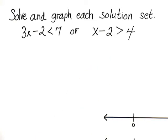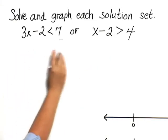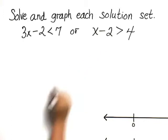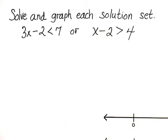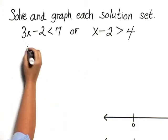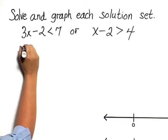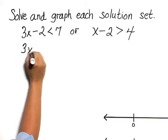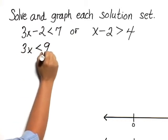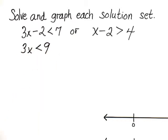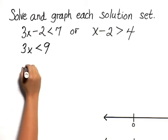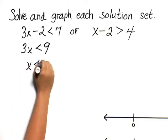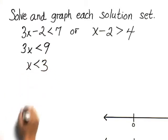To solve this, we will solve each of these parts separately. Over here, we add 2 to both sides, and we get 3x is less than 9. And we divide both sides by 3, and we get x is less than 3.